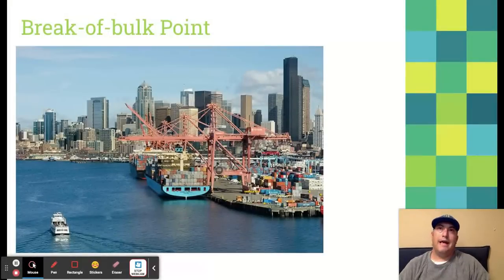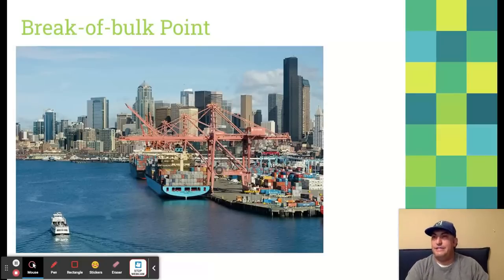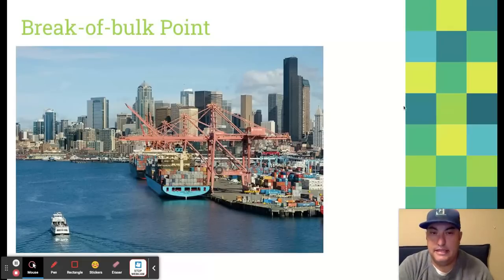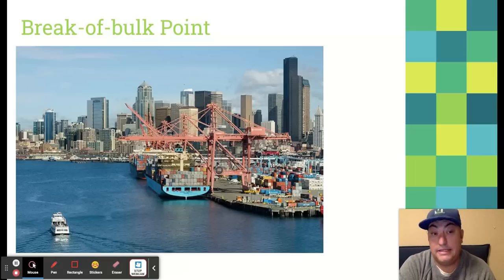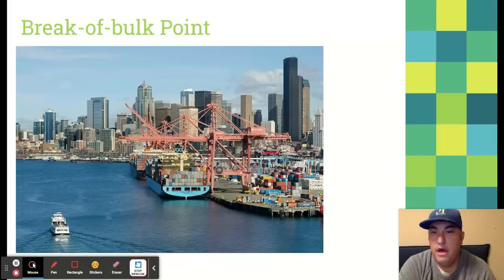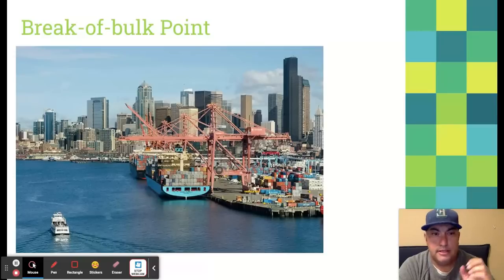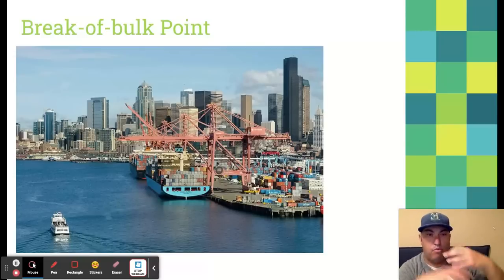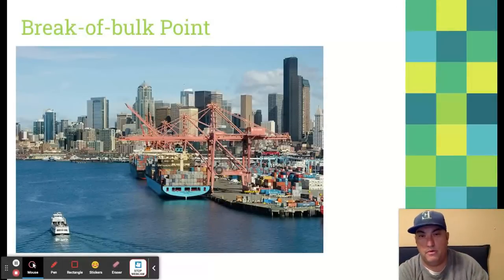Let's talk about break of bulk point. A lot of this unit has to do with our stuff and where it's coming from. One of the places in the economic landscape that makes that possible is the break of bulk point. This is the Port of Seattle — an amazing city, probably my second favorite American city after San Diego — and they've got one of the busier ports in the western United States. When you order stuff on Amazon, it usually gets shipped on one of these container ships, unloaded by the cranes, and then broken down. Someone opens up the container and breaks down all the bulk. That's what a break of bulk point is.